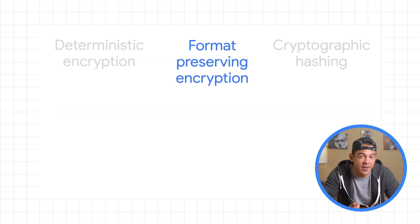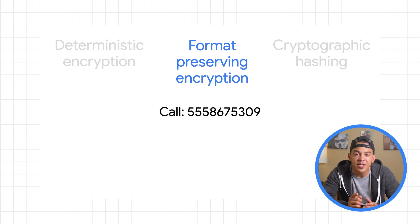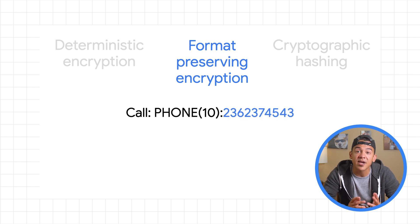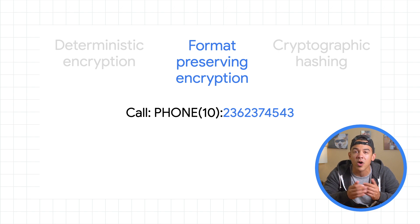The next method is format-preserving encryption, or FPE. Like deterministic encryption, FPE will replace the value of an encrypted string, except it's going to be the same length and use the same character set as the original value. This is the way to go if you need to retain support for any legacy data systems that have strict length and character set requirements.